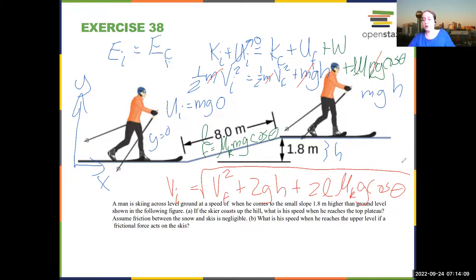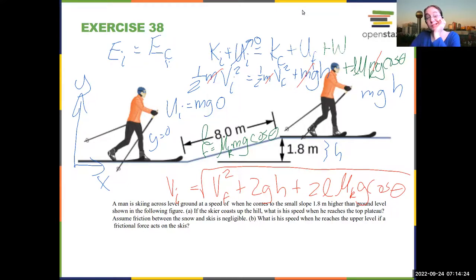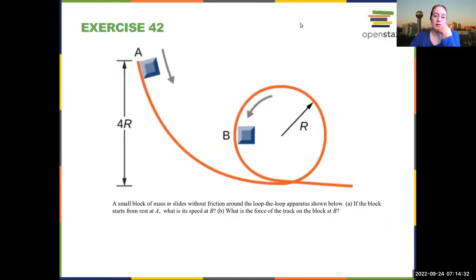That's how you take into account friction. This works when you can calculate the amount of energy lost through a non-conservative force. But there are many cases when you cannot, so often when we have non-conservative forces and some energy loss, you can't use energy conservation.